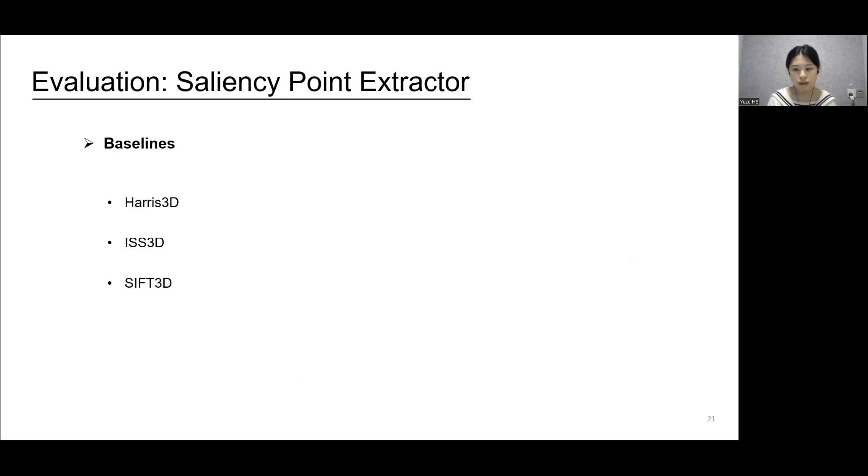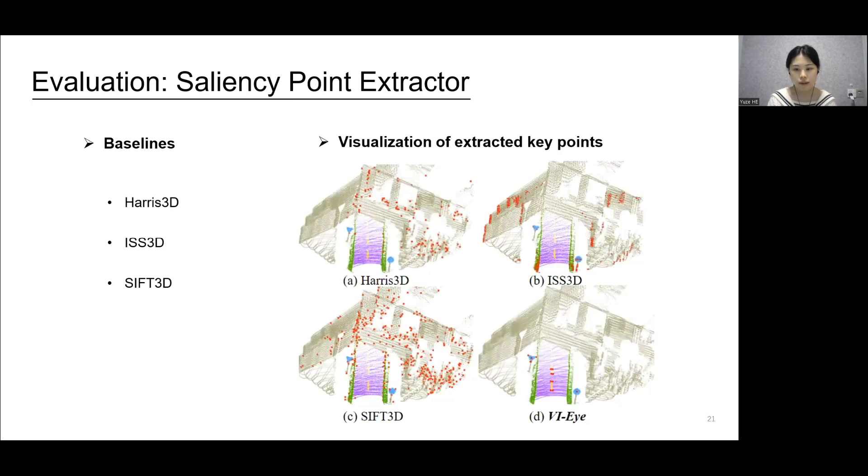We will skip quantitative results here, which can be found in our paper. We visualize the key points extracted by the three baselines and our saliency point extractor in this figure. The key points extracted by the baselines are scattered randomly in the scene, while the key points extracted by our approach are highly interpretable, as they are all geometric vertices or centers of the semantic objects.